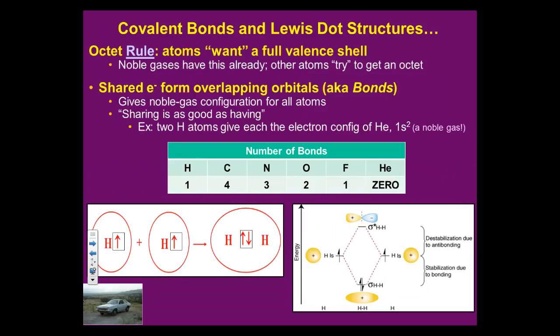Covalent bonds and Lewis dot structures. So there's this thing called the octet rule. And octet means eight. The octet rule, it has to do with eight. They want a full valence shell, which is usually eight. Now remember the small atoms like helium and hydrogen, they like to have two electrons in the outer shell, but usually it's eight. Noble gases don't play this game. They already have a full outer shell. They don't want to try to get an octet. They have an octet already. They have a full outer shell. But most of the other atoms will try to get a full outer shell by gaining electrons or losing electrons or sharing electrons.